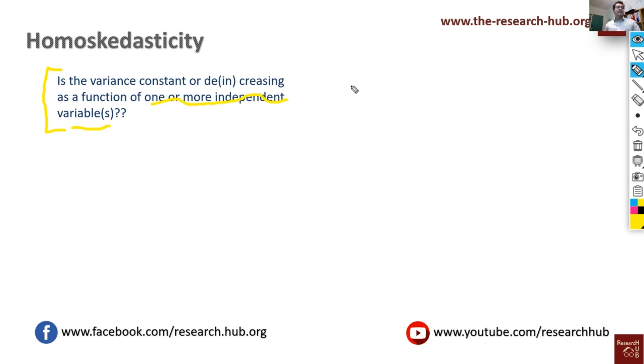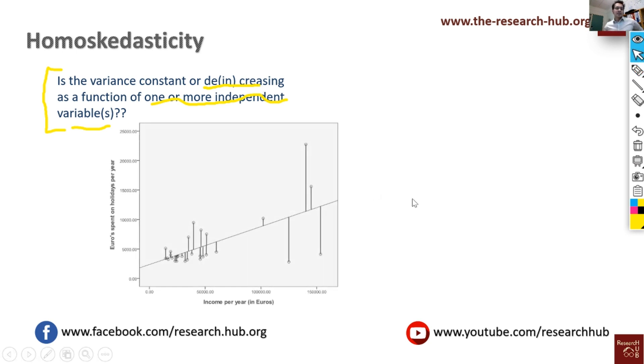If the variance is constant then data is homoscedastic. But if the variance is increasing or decreasing as a function of one or more independent variables, then we have a problem - then the data is heteroscedastic. So how does it look like? It looks something like this.